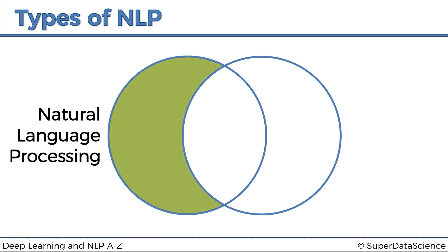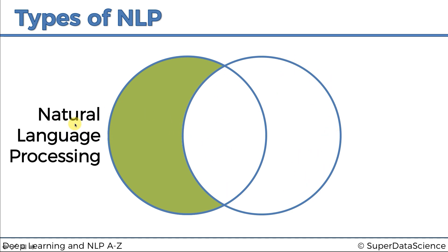On the left we've got natural language processing overall, and this refers to the whole circle on the left. The reason we've colored just this green part is because that's the non-overlapping part — anything in here is just natural language processing with disregard to the second circle. But natural language processing is indeed everything that is in this first circle.